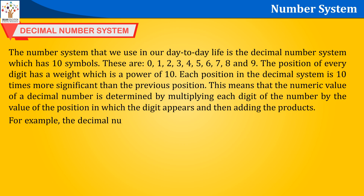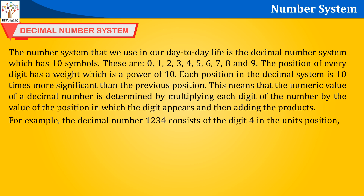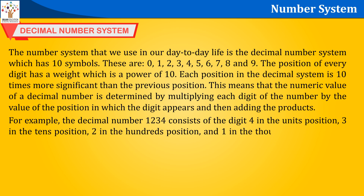For example, the decimal number 1234 consists of the digit 4 in the unit's position, 3 in the 10's position, 2 in the 100's position, and 1 in the 1000's position. Its value can be written accordingly using positional notation.